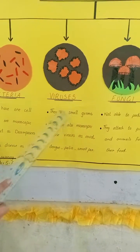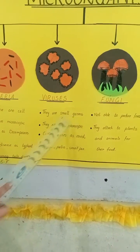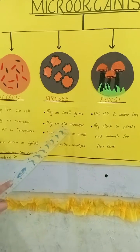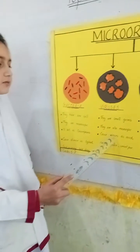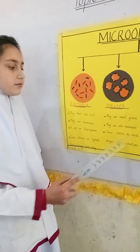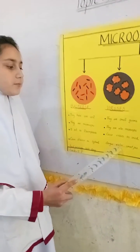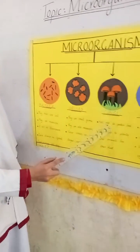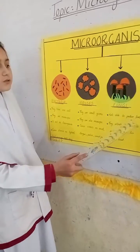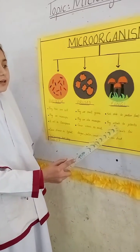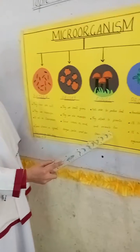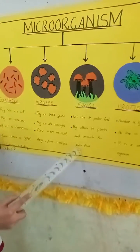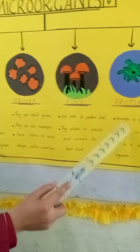Virus: they are small germs, they are also microscopic, they cause diseases such as COVID and smallpox. They are not able to produce food — they are attached to plants and animals for their food.